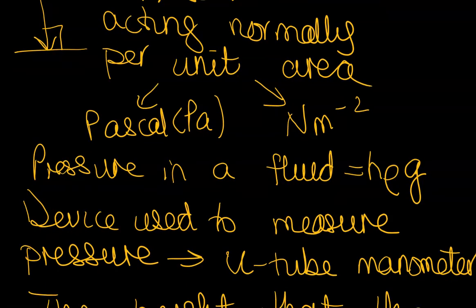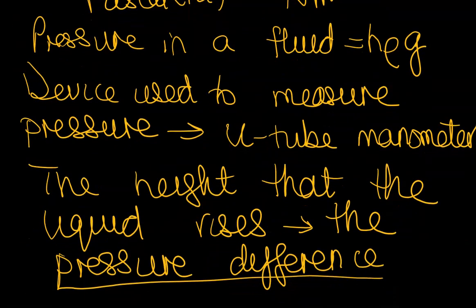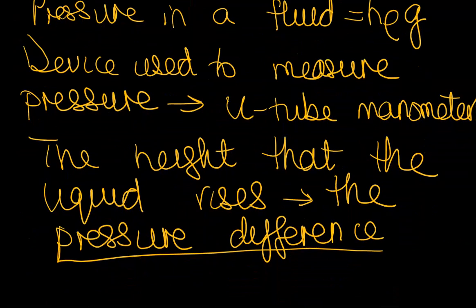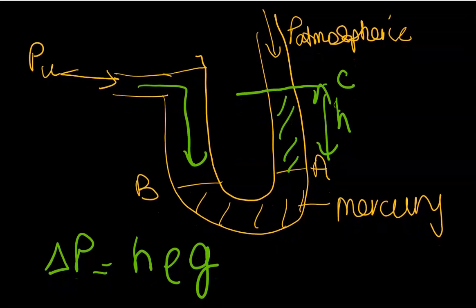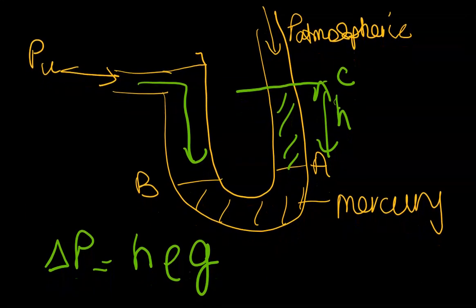Now that being said, we consider a device which is used to measure pressure and that is called a U-tube manometer. How the device physically looks is that I have a U-shaped glass tube with a uniform cross-sectional area, and I fill it typically with mercury or any liquid of known density.